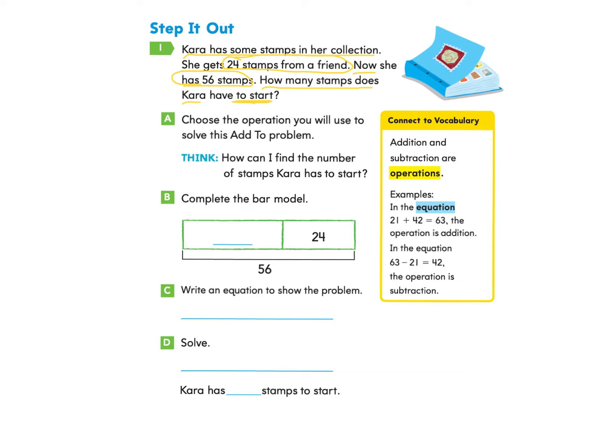Let's take a look at part A. Choose the operation you will use to solve this add to problem. Think, how can I find the number of stamps Kara has to start?